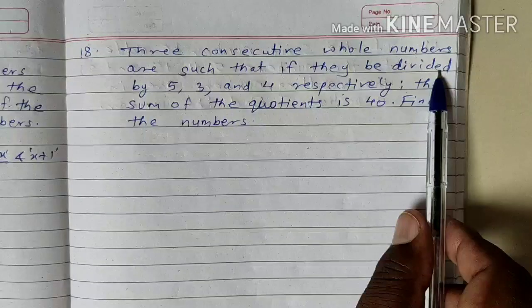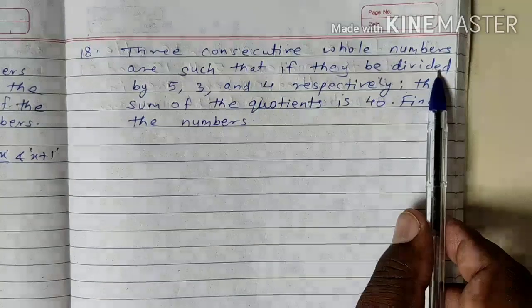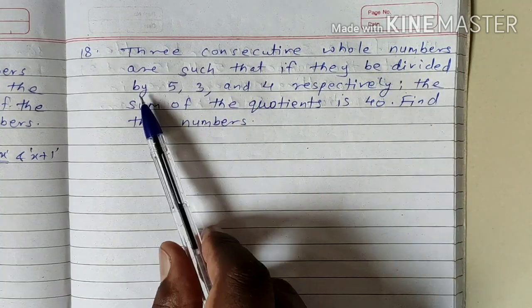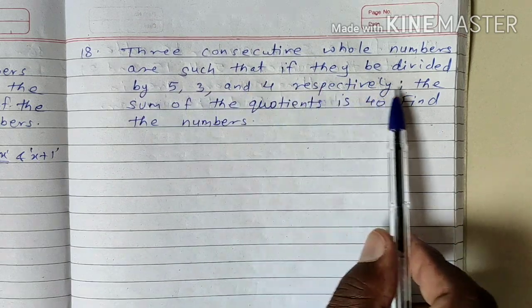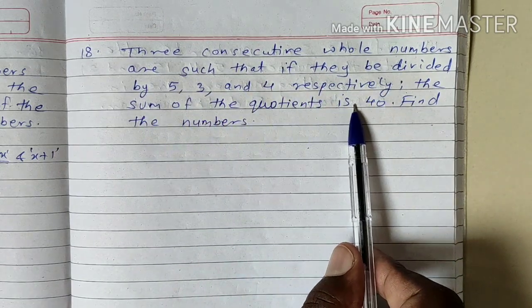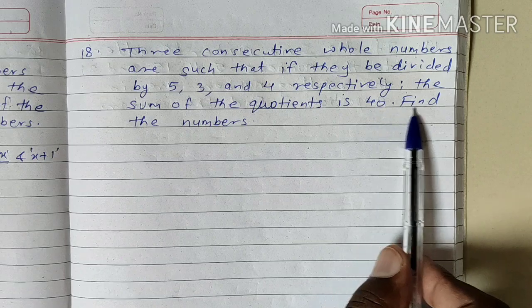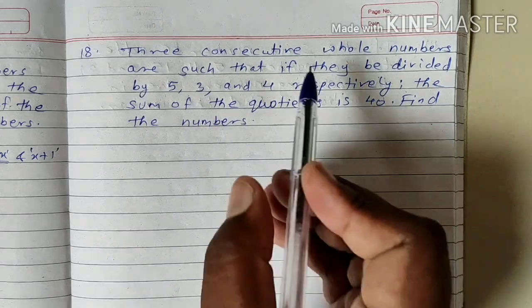Question number 18. Three consecutive whole numbers are such that if they are divided by 5, 3, and 4 respectively, the sum of the quotients is 40. Find the numbers.